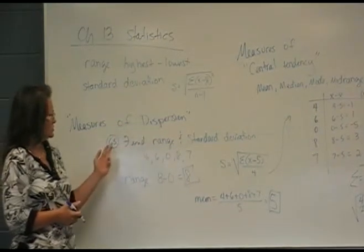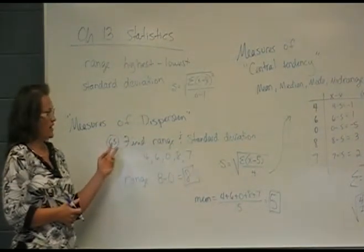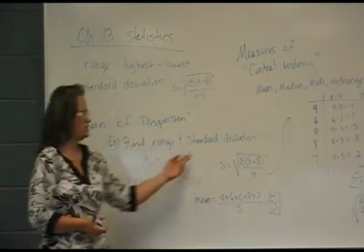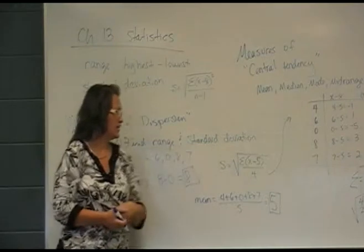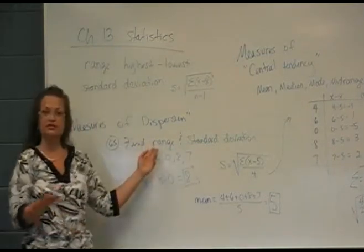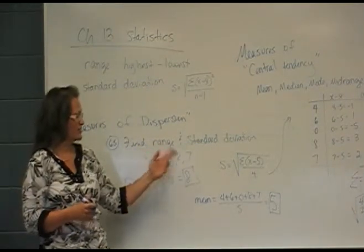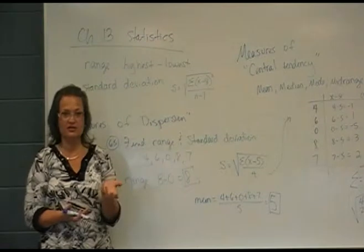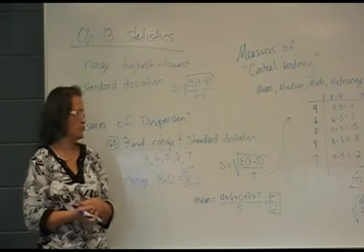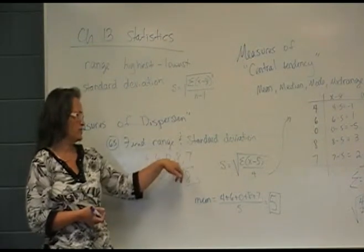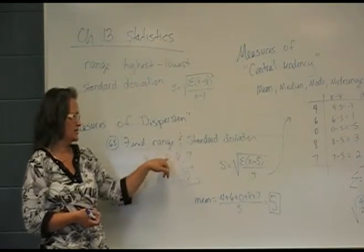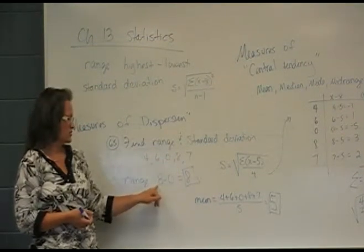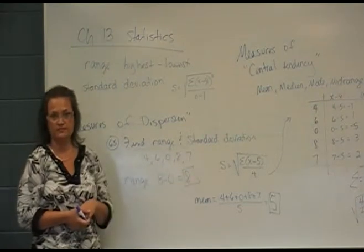So on measures of dispersion, number 65, you're asked to find both the range and the standard deviation. The range is the easy one — you just subtract the biggest number from the smallest number in the list. The biggest number is 8, the smallest is 0, so the range is 8.